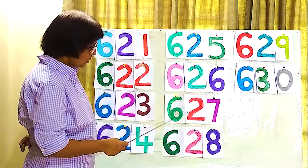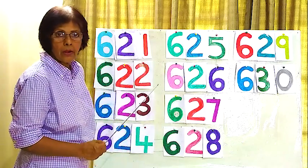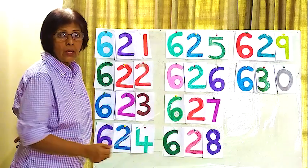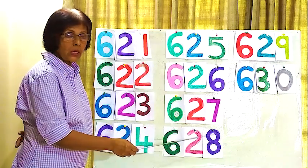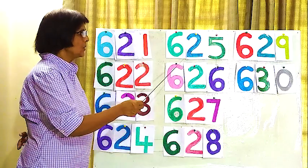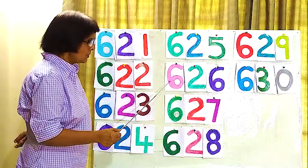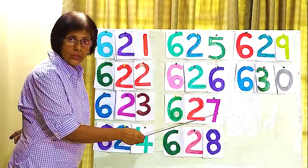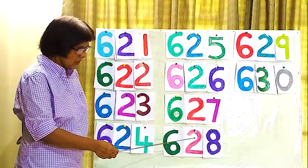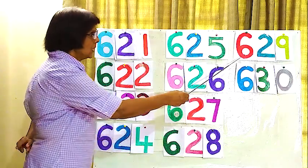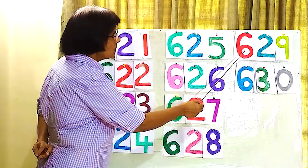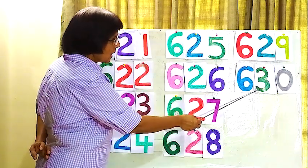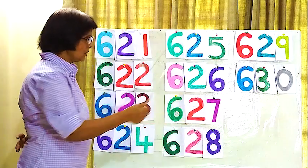626, 626, 627, 627, 628, 628. The last two numbers here: 629, 629.